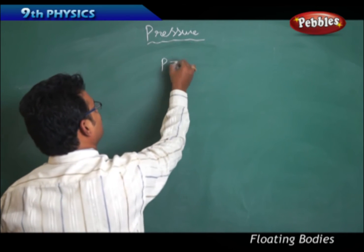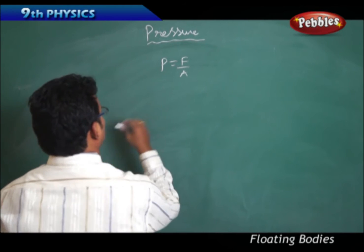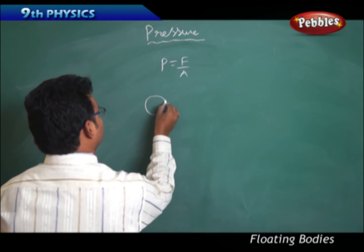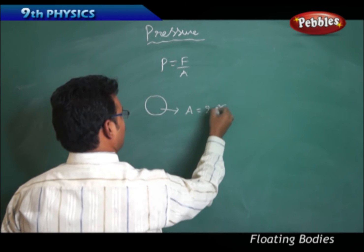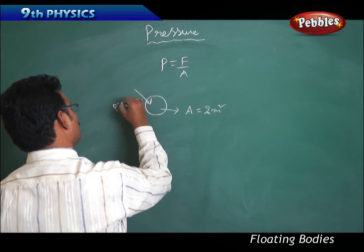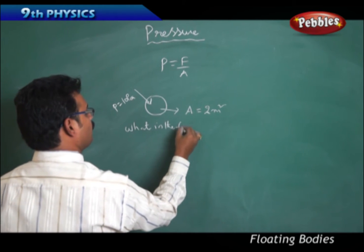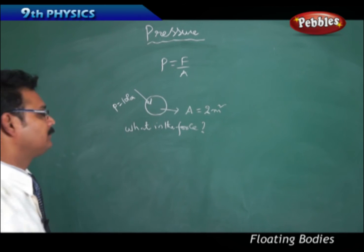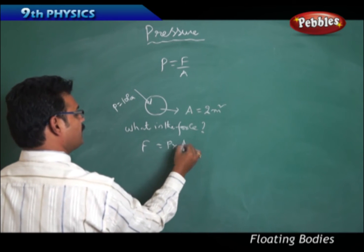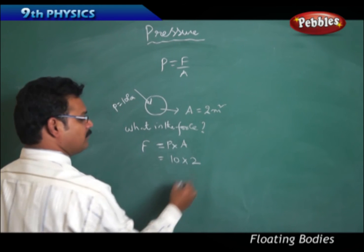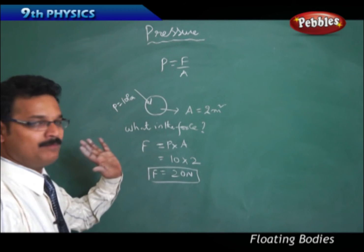Let's see another numerical example. There is a ball whose area A equals 2 meter square, and the ball is experiencing a pressure P equals 10 Pascals. What is the force acting on the ball? We know P equals F divided by A, but we need force, so rearranging: force equals pressure into area. So force equals 10 Pascals into 2 meter square, which gives 20 Newtons.